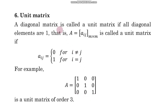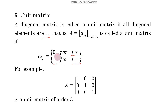A unit matrix is a diagonal matrix in which all diagonal elements are 1. So a_ij = 0 when i ≠ j, and a_ij = 1 when i = j. You can say it is a particular kind of scalar matrix where k = 1. This is a unit matrix of order 3.